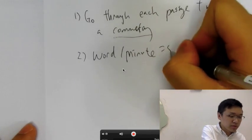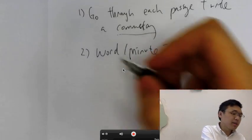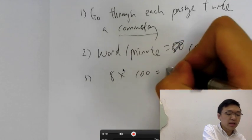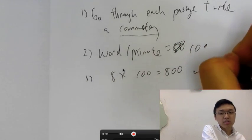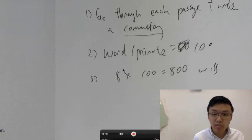This is word per minute. Let's say your word per minute is 100. Then that means that in 8 minutes, just 8 times 100. So you need 800 words. What you need to do, if that were the case, is you need to write a 800-word commentary for each passage.